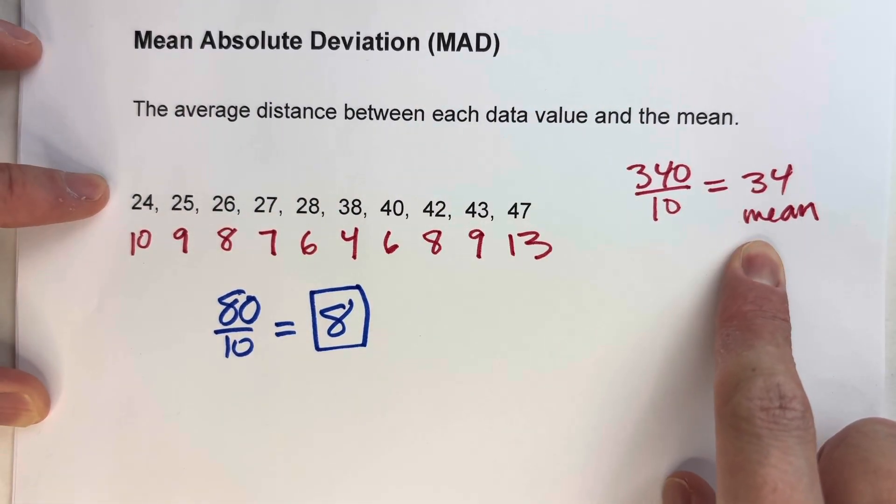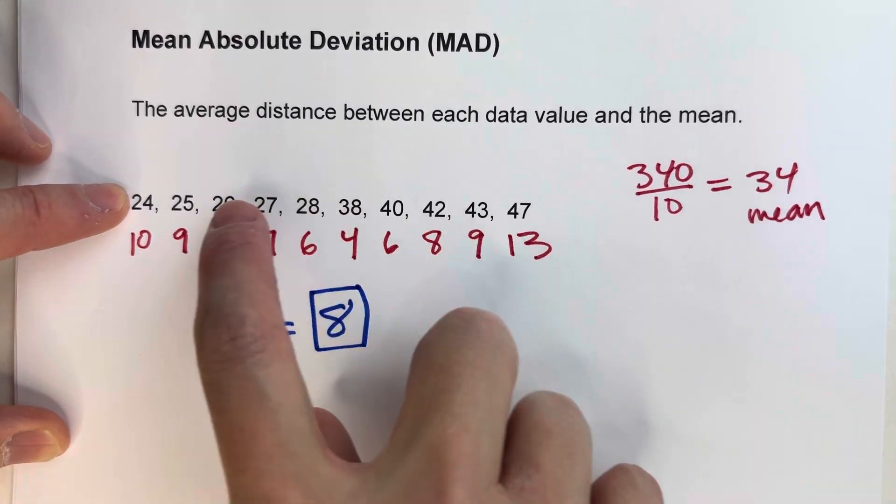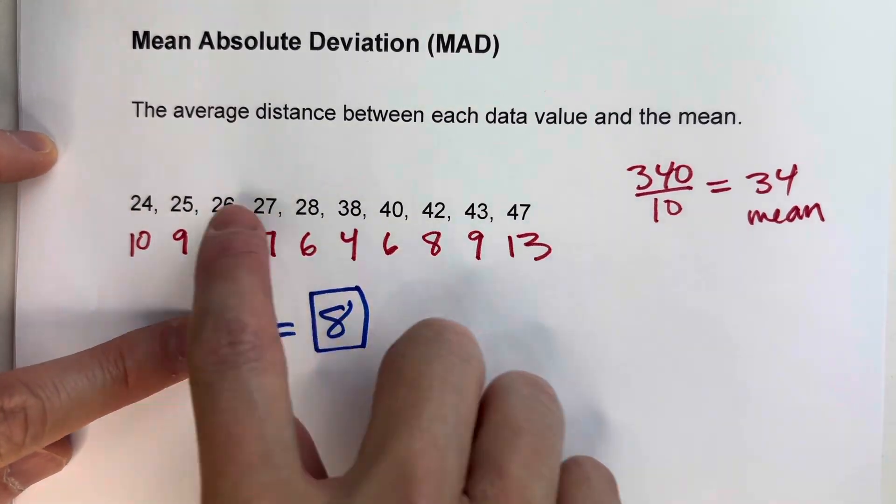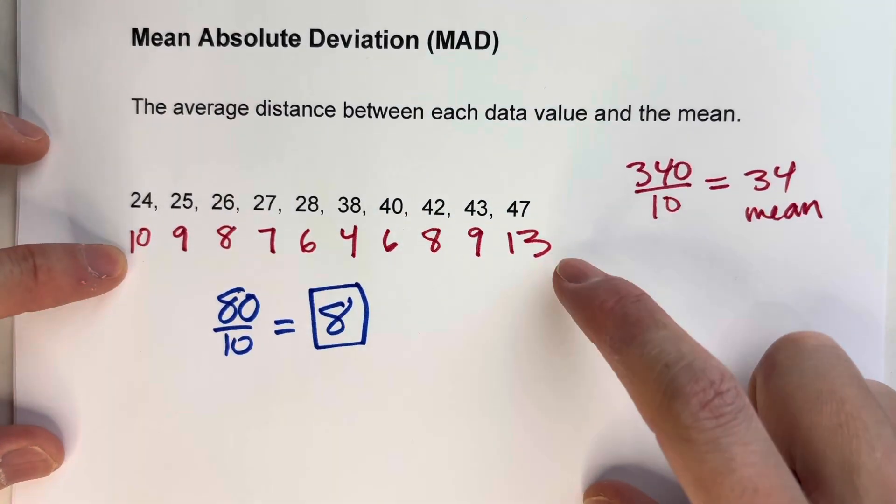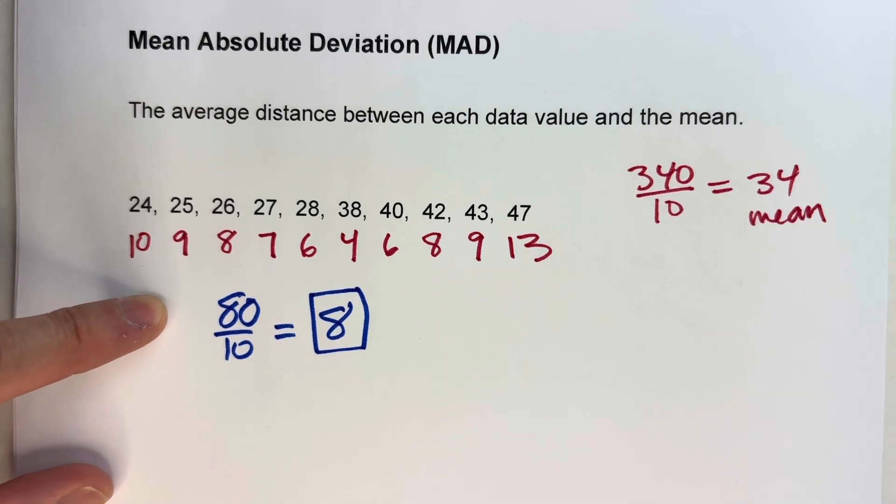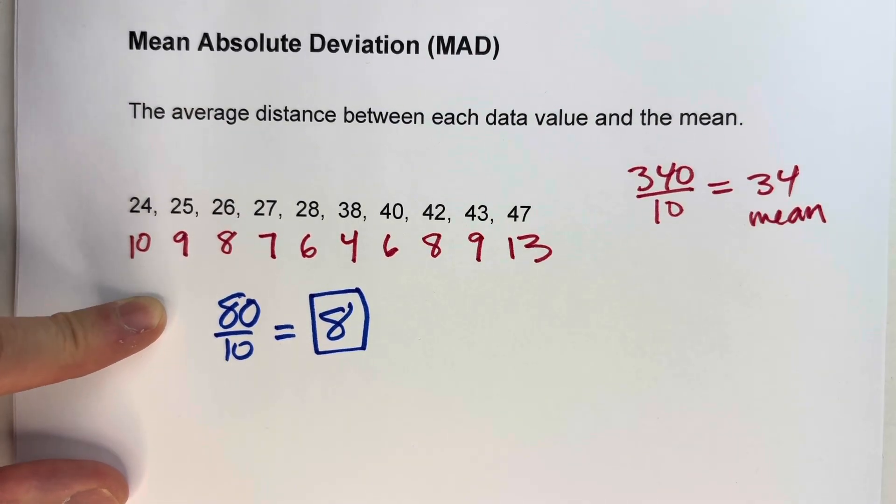Step 1, find the mean of the whole data set. Step 2, find how far apart each of these data values are away from that mean. And then step 3, find the mean of those distances. So, I hope you found this video helpful. If you did, please hit that like button. Also subscribe, because it really helps us out. But with that being said, good luck on your math, and I will see you next time.